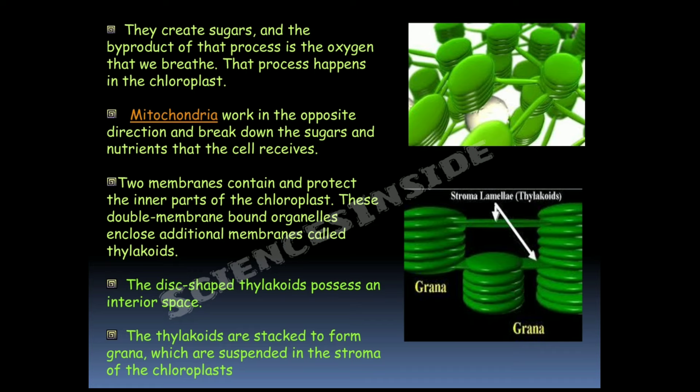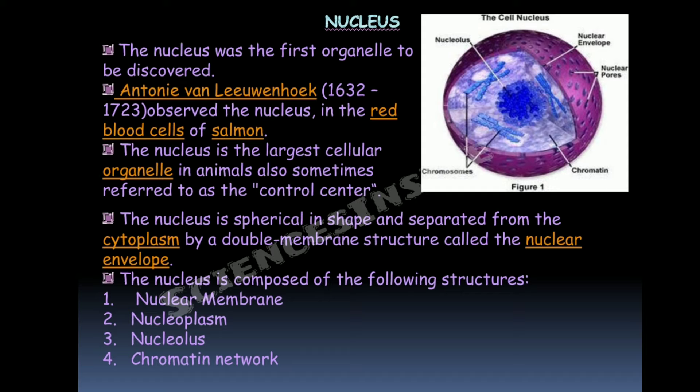The nucleus was the first organelle to be discovered; Antonie van Leeuwenhoek in 1632 observed the nucleus in the red blood cells of salmon. The nucleus is the largest cellular organelle in animals and is sometimes referred to as the control center. It is spherical in shape and separated from the cytoplasm by a double membrane structure called the nuclear envelope. It is composed of: nuclear membrane, nucleoplasm, nucleolus, and chromatin network.